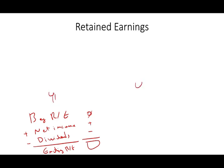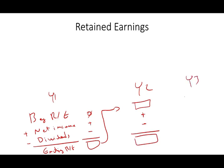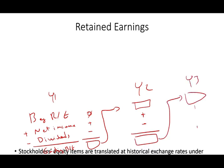Now year two, or period two, this ending retained earnings becomes your beginning retained earnings. Then you add net income, then you subtract dividends, then you have again your ending retained earnings, and your ending retained earnings becomes your year three beginning, so on and so forth.